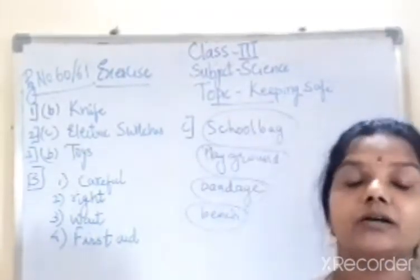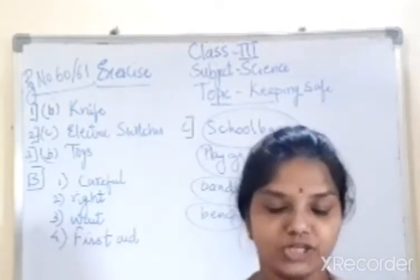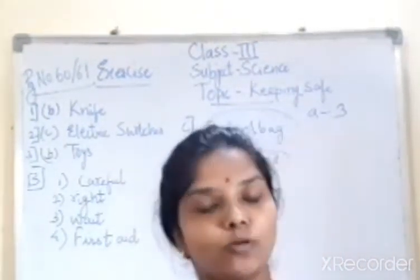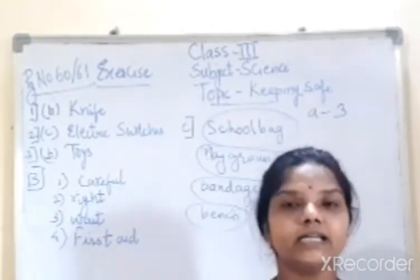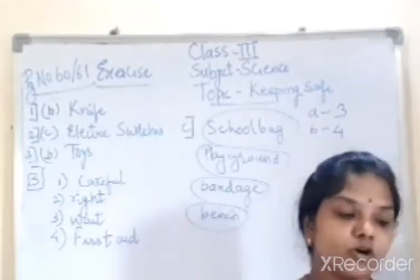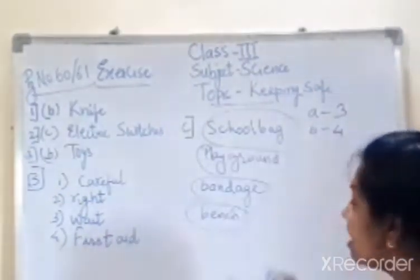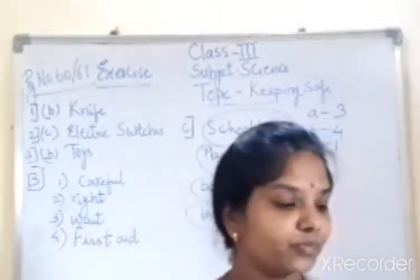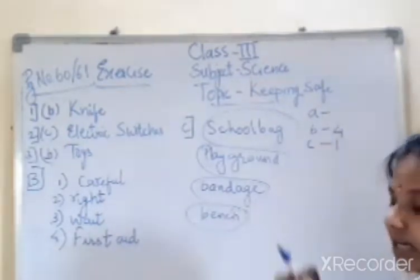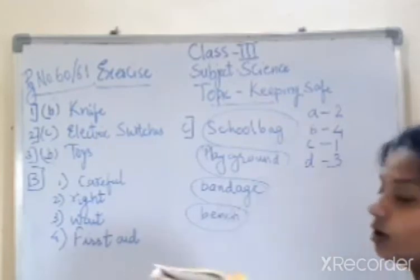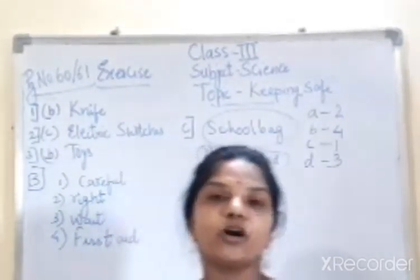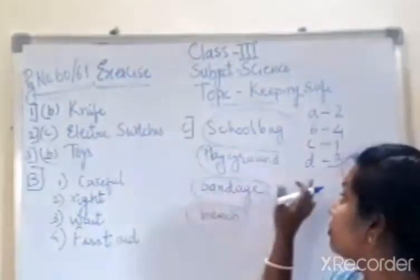Next, match the following. Sharpener matches with pencil — we use a sharpener to sharpen a pencil. Subway matches with underground path — subway is an underground path. Cotton matches with first aid box — cotton should be kept in the first aid box. Knife matches with sharp object — a knife is a sharp object. Match them accordingly.